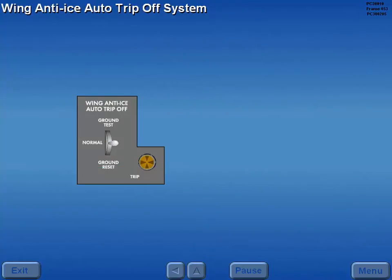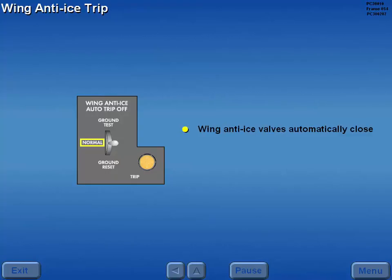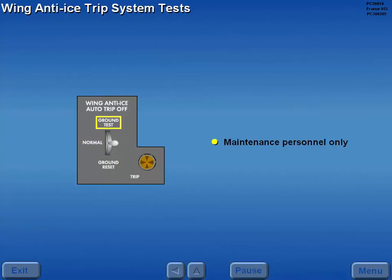Some aircraft are equipped with a wing anti-ice automatic trip-off system. This system is controlled by the wing anti-ice auto trip-off switch. With the switch in normal, should the wing anti-ice duct rupture within the pressurized area of the aircraft, the wing anti-ice auto trip-off light illuminates, and all wing anti-ice valves automatically close. These valves cannot be reset in flight. Tests and operational checks of this system are performed by maintenance personnel only.